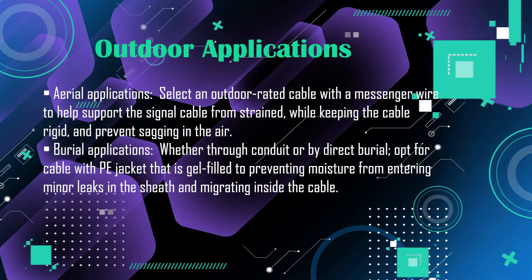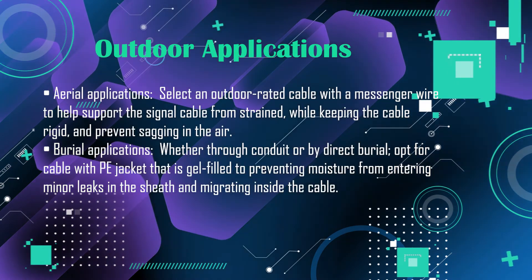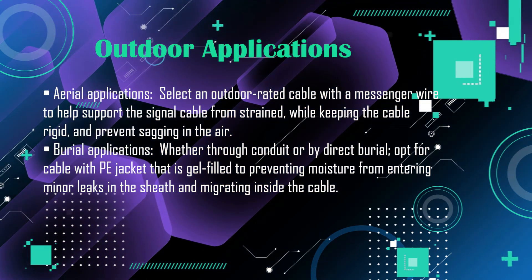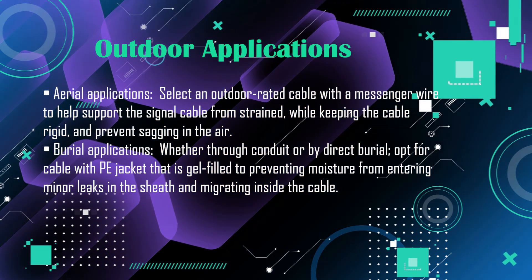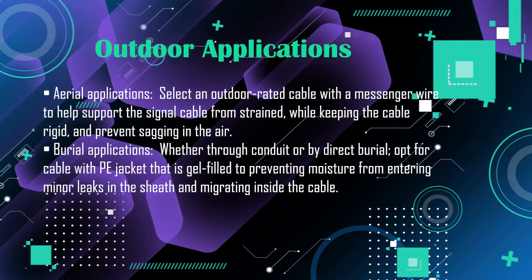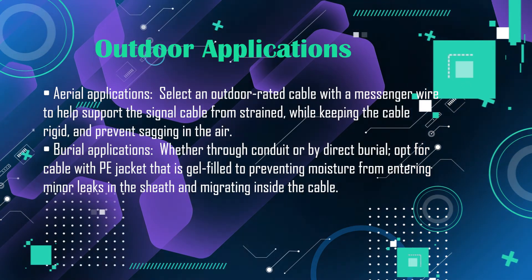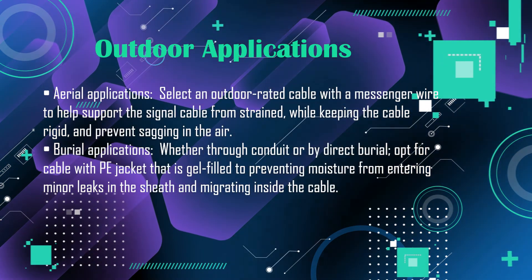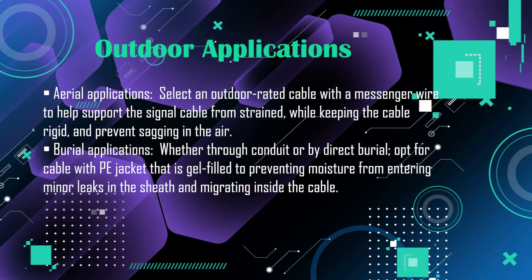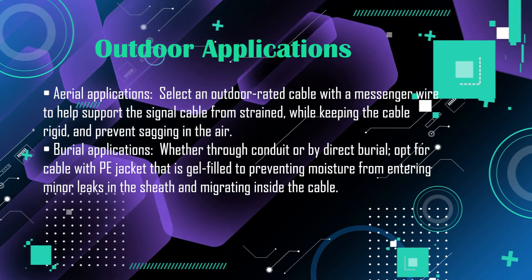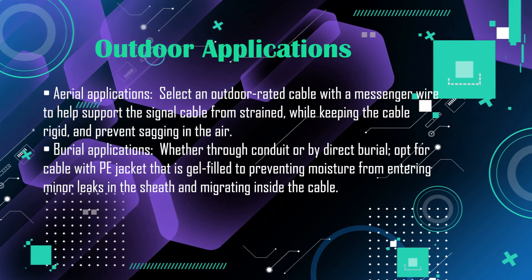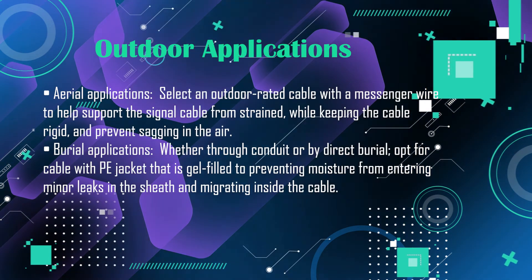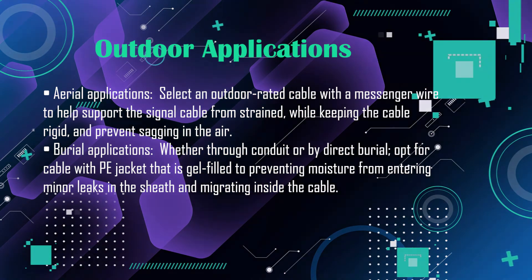For aerial applications, select an outdoor rated cable with a messenger wire to help support the signal cable from strain while keeping the cable rigid and preventing sagging in the air. For burial applications, whether through conduit or by direct burial, opt for cable with a PE jacket that is gel filled to prevent moisture from entering minor leaks in the sheath and migrating inside the cable.